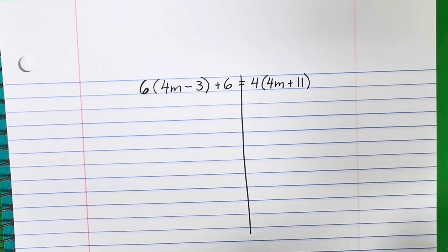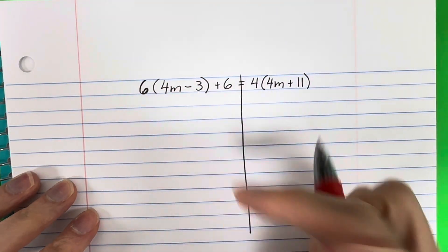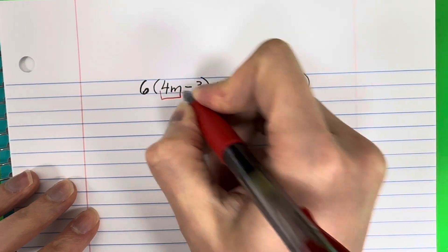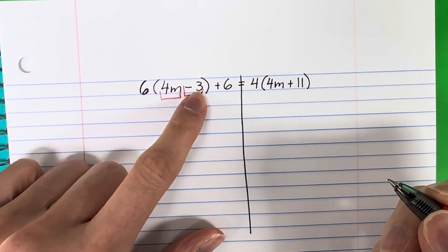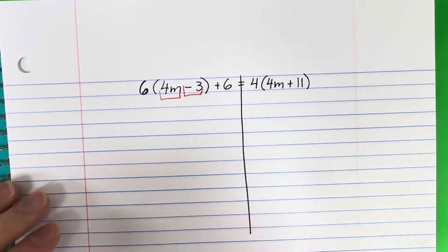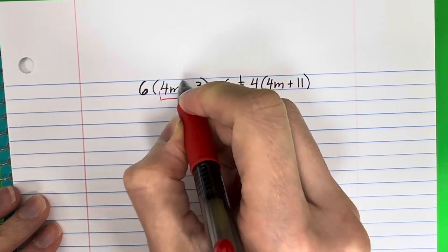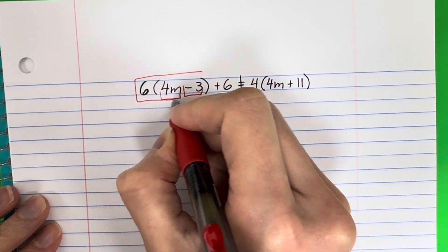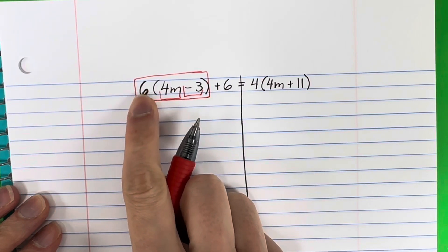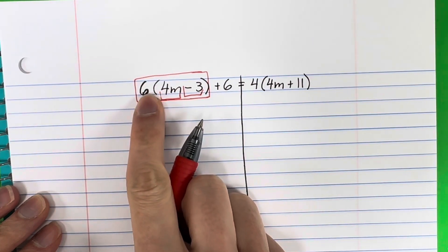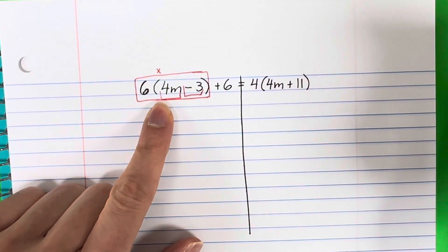There are two numbers inside the parentheses: 4m and negative 3. That negative in front is with the 3. The parentheses involve the stuff inside and the number right in front touching the parentheses. Parentheses means multiply, so let's go ahead and multiply.